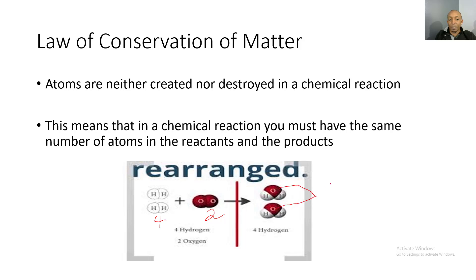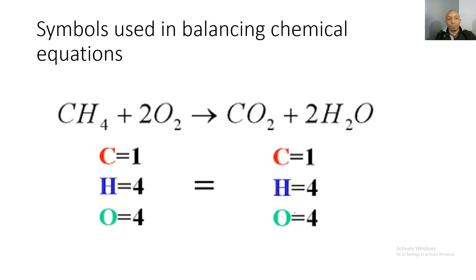After the chemical reaction takes place, we still have two oxygen, just like we had in our reactants, and we also have four hydrogen in our products, just as shown in our reactants. This perfectly demonstrates that atoms were not created or destroyed in this chemical reaction — we have the same number of atoms in our reactants as we do in our products. So now let's go ahead and take a look at the symbols used in balancing chemical equations.